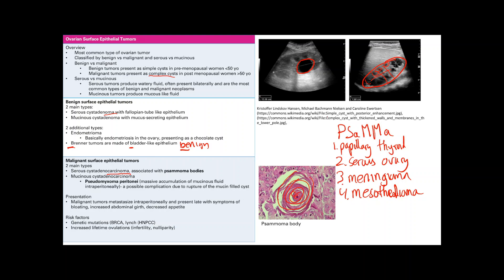These tumors metastasize intraperitoneally and they present late with symptoms of abdominal bloating, increased abdominal girth, decreased appetite. As you can tell, these are very non-specific abdominal symptoms. That's the best way to summarize them: non-specific abdominal symptoms.